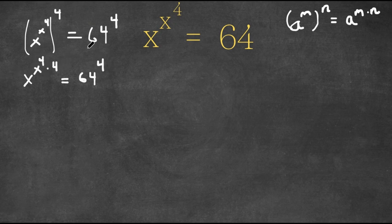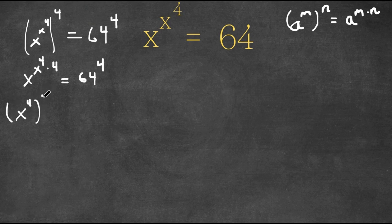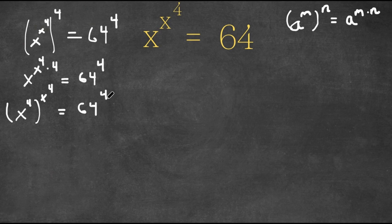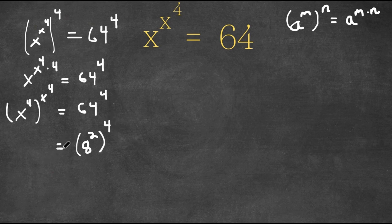Now what I'm going to do is I'm going to rearrange this — I'm going to change this back into the nested exponent form. Now, 64 can actually be written as 8 squared. So 8 squared to the power of 4. And this is still equal to x to the power of 4 to the power of x to the power of 4.